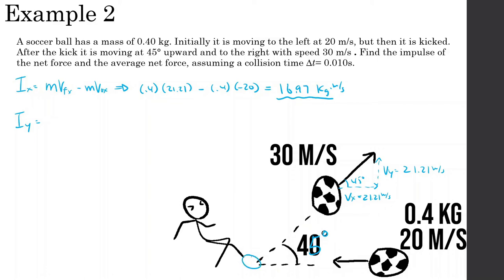Now the impulse in the y direction: mass times velocity final in y minus mass times velocity initial in y. The mass is 0.4, velocity final in y is 21.21 meters per second, and the initial velocity in y is 0 since it was only moving in the x direction. So 0.4 times 21.21 gives 8.48 kilogram·meters per second.